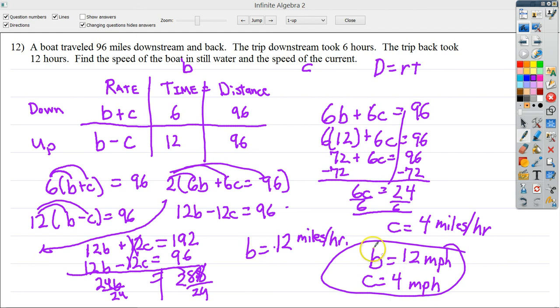And you could test it, if you like. If I add those two together, and I multiply it by 6, adding them both together would give you 16. And if you multiply 16 times 6, it does indeed give you 96 miles. If you want to do the bottom one for the upstream, you take 12 and subtract 4, and that's 8. And 8 times 12 is indeed 96. So, I can say with pretty good confidence that this is the correct answer.